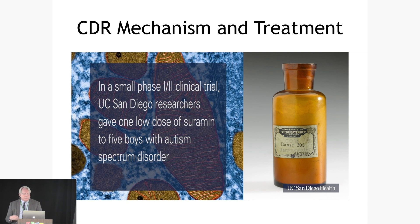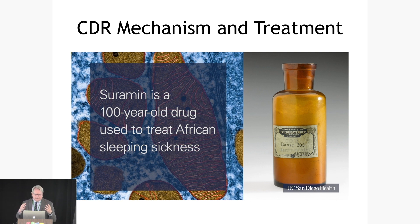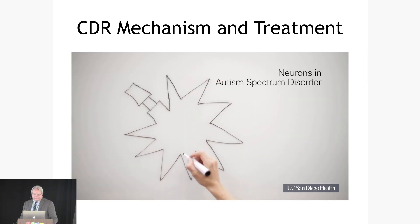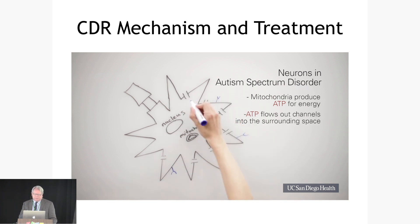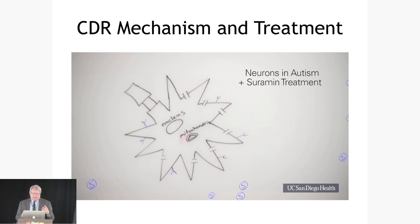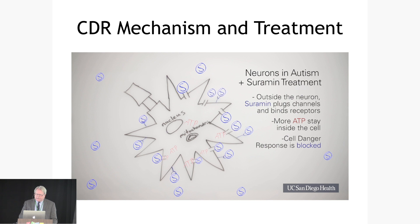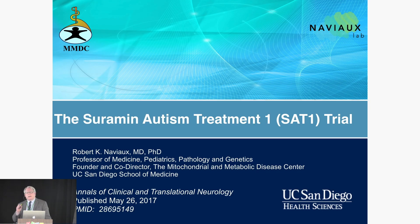We conducted a phase 1/2 clinical trial testing whether this hundred-year-old drug used to treat African sleeping sickness might be able to unblock the cell danger response and lead to healing. Here's a cartoon of a neuron with a nucleus and mitochondria, and these are the G-protein coupled receptors that respond to ATP. Under stress conditions, the cell is releasing ATP, which binds and changes the functional state of the cell. A drug that blocks that dissipated loss of ATP and competes with the extracellular danger signaling may allow cells to resume normal development and communication. This led to the Suramin Autism Treatment trial — the SAT-1 trial.